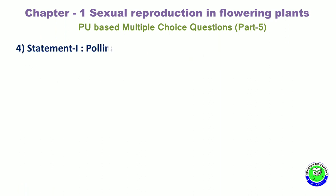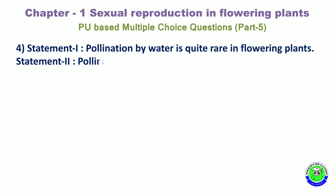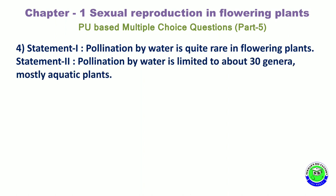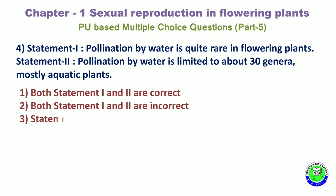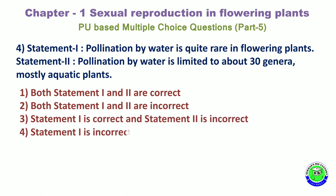Question 4. Statement 1: Pollination by water is quite rare in flowering plants. Statement 2: Pollination by wind is limited to about 30 genera, mostly aquatic plants. Option 1: Both statements 1 and 2 are correct. Option 2: Both statements 1 and 2 are incorrect. Option 3: Statement 1 is correct, statement 2 is incorrect. Option 4: Statement 1 is incorrect, statement 2 is correct. The correct answer is the 3rd option.